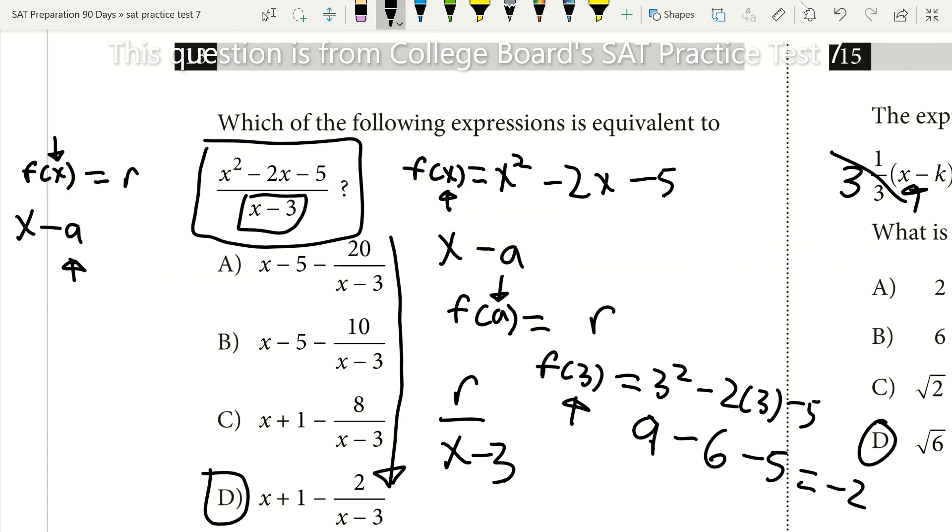And that'll get you your remainder but keep in mind you have to put your remainder then over your denominator which in this case was x minus 3. So hopefully that was helpful and hopefully you can use that on the SAT math section to save some time.